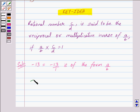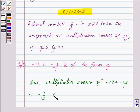Thus, we have the multiplicative inverse of -13, which is equal to -13/1, is -1/13. And this is since we know that -13/1 × -1/13 = 1.